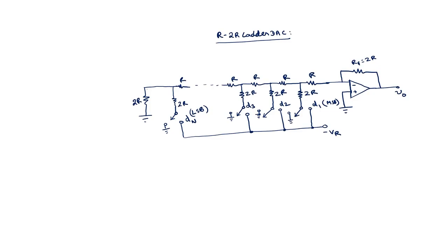This R2R ladder DAC gives the same expression as the weighted resistor DAC, where V0 is equal to V_fullscale times (D1 × 2^(-1) + D2 × 2^(-2) + ...). To obtain this expression for the output V0, I will consider a 3-bit R2R ladder DAC.